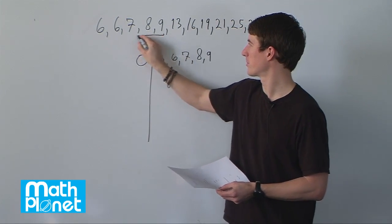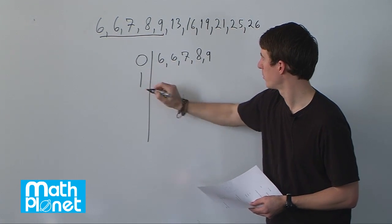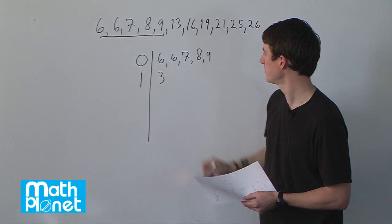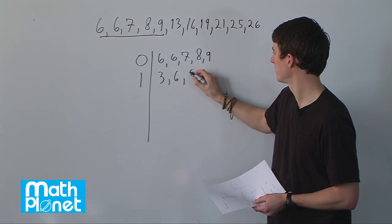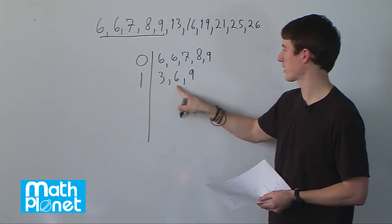So that's these terms here. Then for our tens, we have 13, 16, and 19. So 13, 16, and 19.